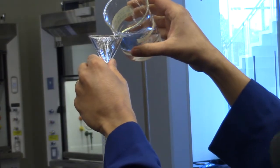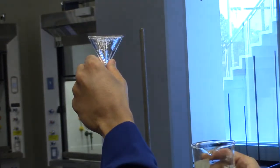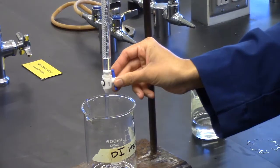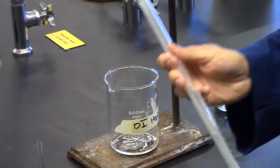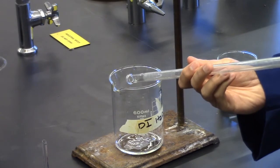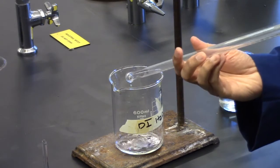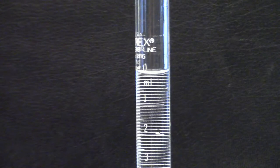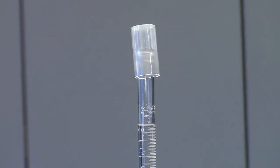Next, the burette will be rinsed with two 3-milliliter aliquots of the 0.25 molar sodium hydroxide and filled to the 0.0 milliliter reading. Use a burette cap or a test tube on top of the burette to prevent solvent evaporation.